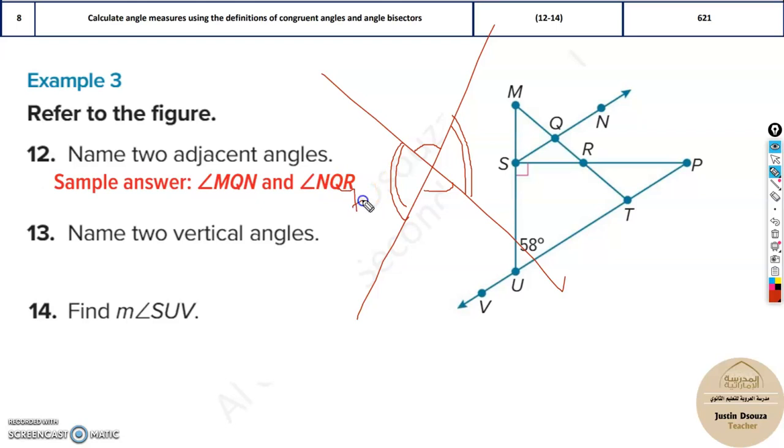Say now this is 70 degrees. Then this too would be 70 degrees. They are always equal. Now this would be 110 then. So this would also be 110. So this is about vertical angles.